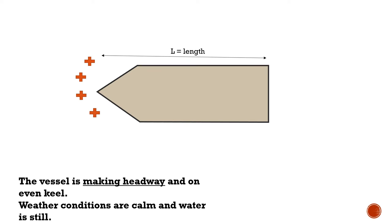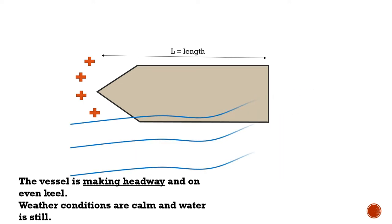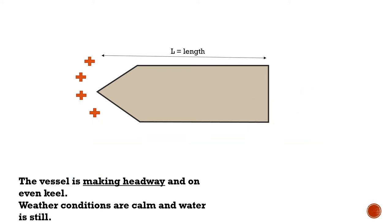In the second case, the vessel is making headway — going ahead — again on even keel with calm conditions and still water. For those wondering what a pivot point is: the pivot point is the point about which a ship turns. It is the point about which a ship pivots, and this plays a critical role in the maneuvering of the ship. The location of the pivot point when going ahead or astern is therefore important.